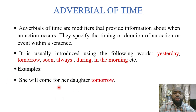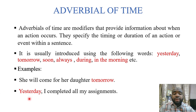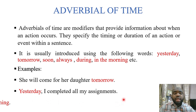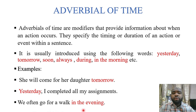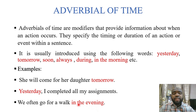For example: 'She will come for her daughter tomorrow' — 'tomorrow' signifies the time she will come. 'Yesterday I completed all my assignments' — not today, not tomorrow, but yesterday. 'We often go for a walk in the evening' — not in the morning, not in the afternoon, but in the evening. These are examples of adverbial of time.